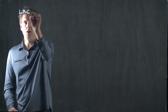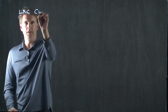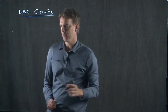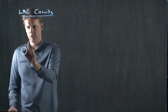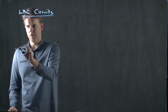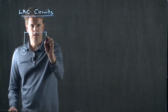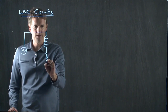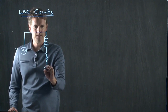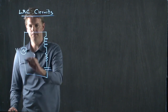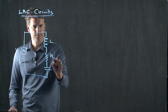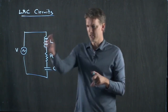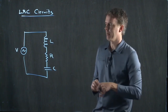An LRC circuit has all of these elements in it. It's got a voltage source V, an inductor L, a resistor R, and a capacitor C. This is why it's called an LRC circuit — you have an inductor, a resistor, and a capacitor.